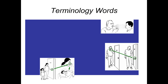Let's talk about some terminology words used in the infection cycle in phlebotomy. The first one is droplet infection, which occurs when infectious agents are spread through respiratory droplets, such as when a person coughs or sneezes nearby. It's important to wear a mask and maintain proper hygiene to reduce the risk when dealing with patients. The incubation period refers to the period between exposure to an infectious agent and the appearance of symptoms, and understanding this helps us identify potential transmission timelines.